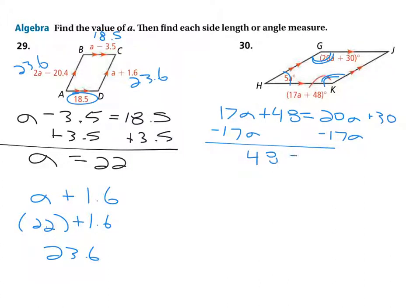And then we're just going to juggle stuff around. We're going to minus 17a, minus 17a, and we get 48 equals 3a plus 30. And then minus 30, minus 30.